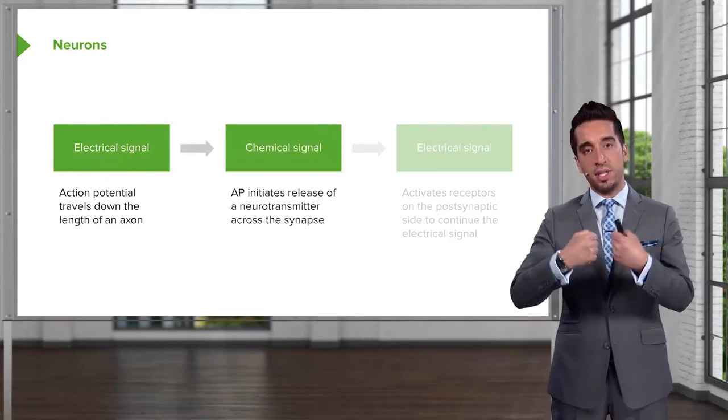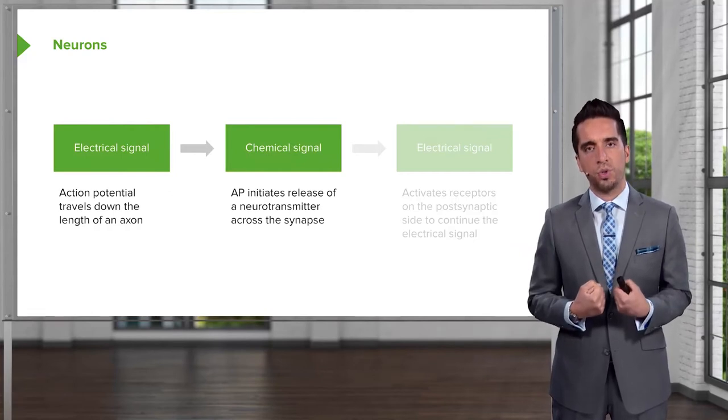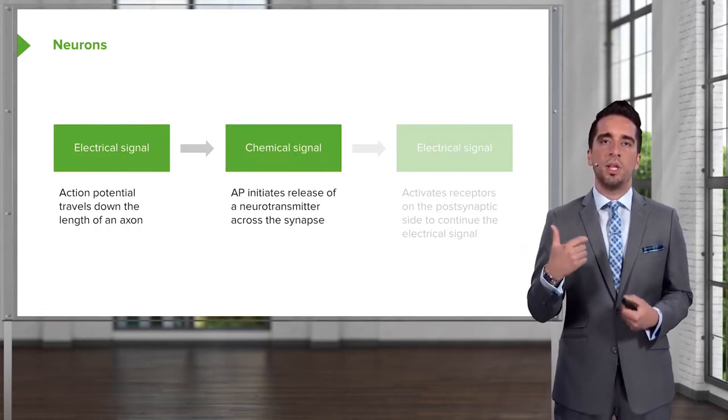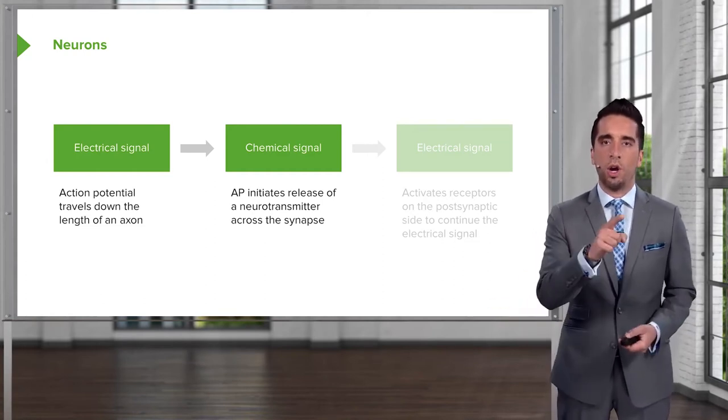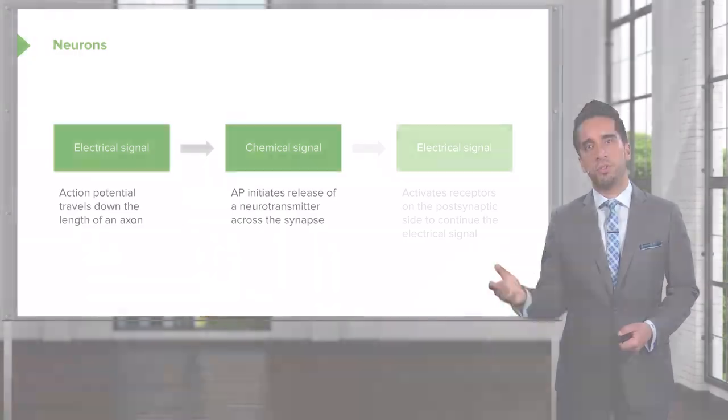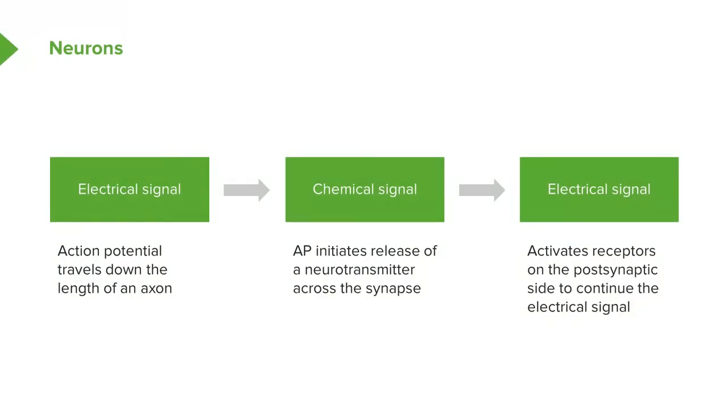And then we're going to have a synapse between two neurons. And at that point, we initiate the chemical signal. And this is where the action potential initiates release of the neurotransmitter across the synapse. And then ultimately, that signal is converted back to an electrical signal. And so the postsynaptic side continues the electrical signal via an action potential. So we should understand that we're going from electrical to chemical to electrical. And another point to remember is that at no point are any of these neurons actually in contact. There's always a synapse between two different neurons.